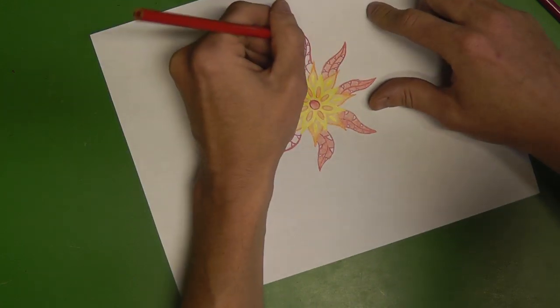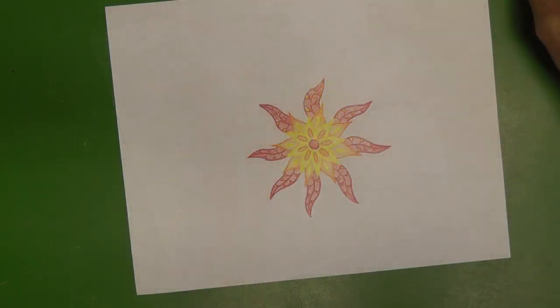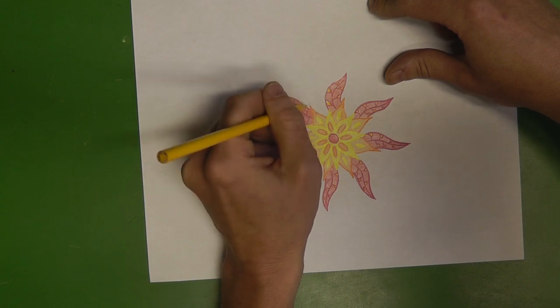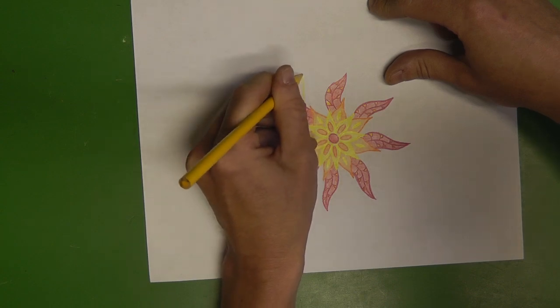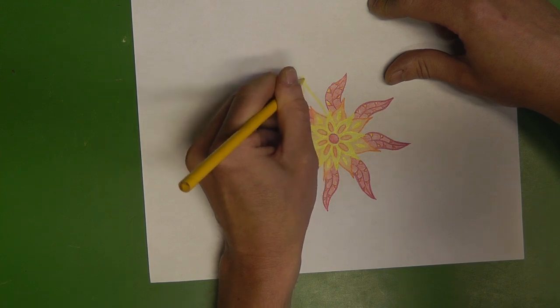And now I'm just going around and filling in all of the red petals, or the leaves, making sure to leave the white of the little triangle designs I've created within each of the red petals. And then I've actually filled in those white little triangle spaces with yellow.